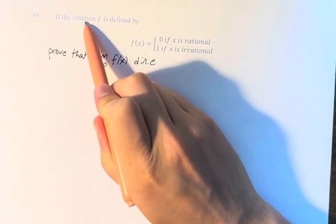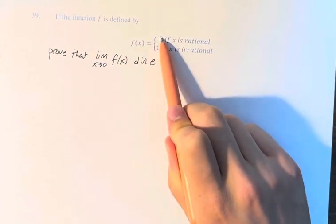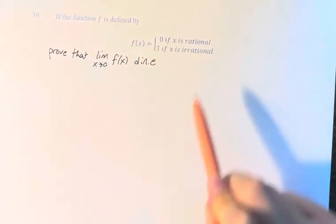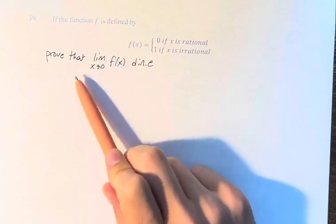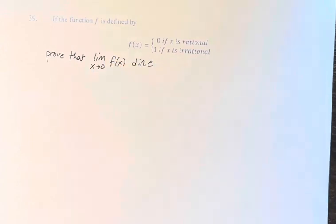In this problem, we're told if the function f is defined by f of x is equal to 0 if x is rational and 1 if x is irrational, prove that the limit as x approaches 0 of f of x does not exist.